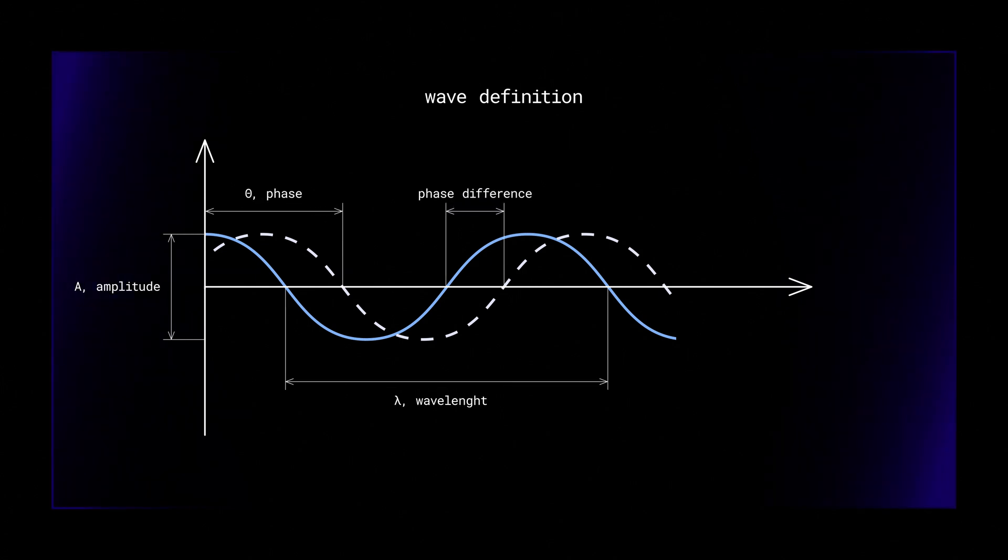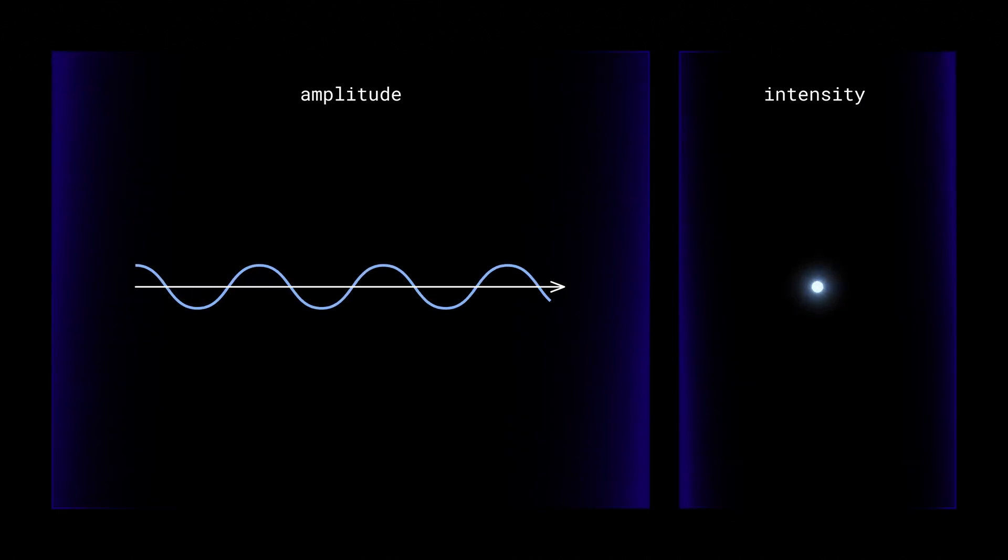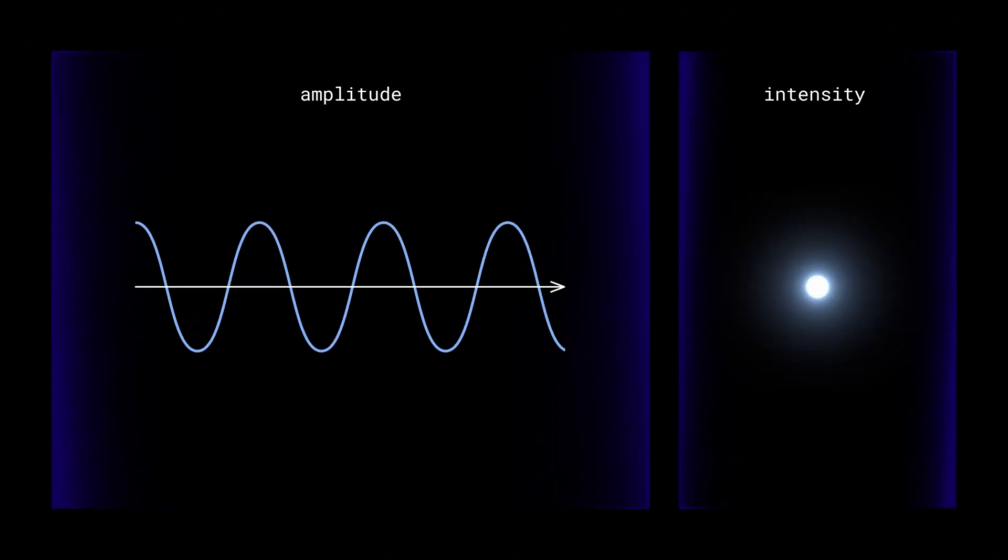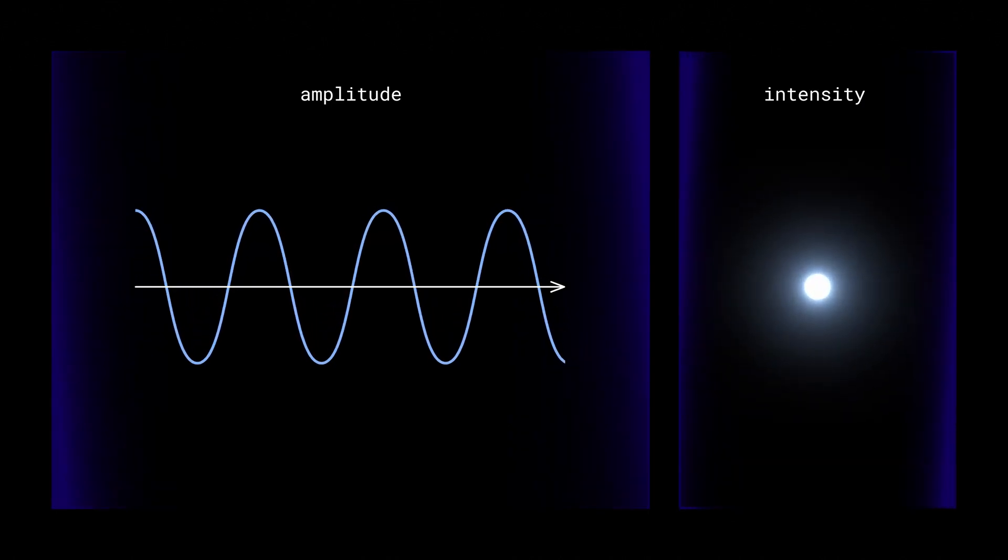Our eye can distinguish amplitude because amplitude is equivalent to brightness. The greater the amplitude, the greater the brightness and vice versa.